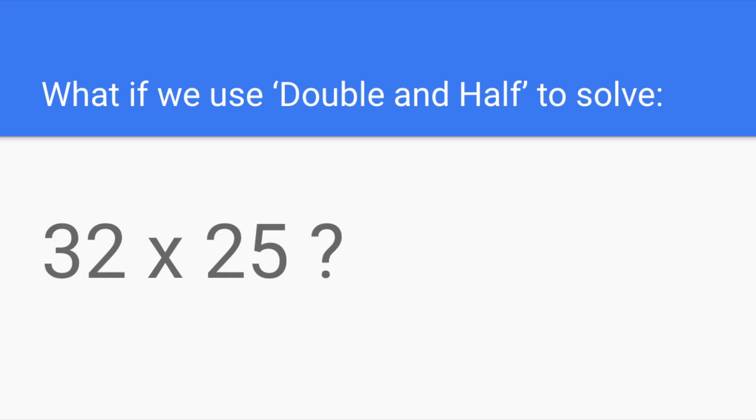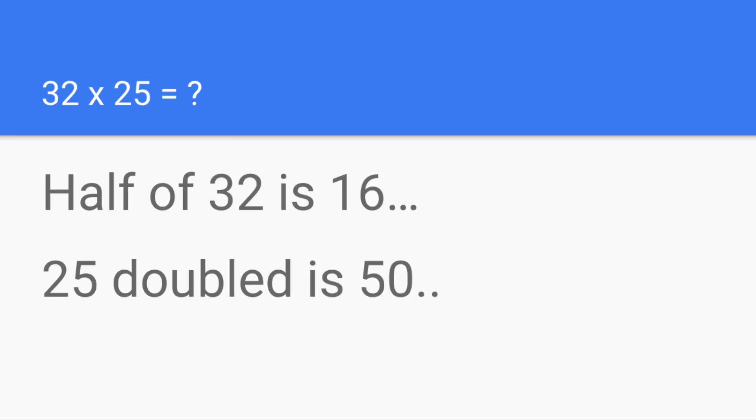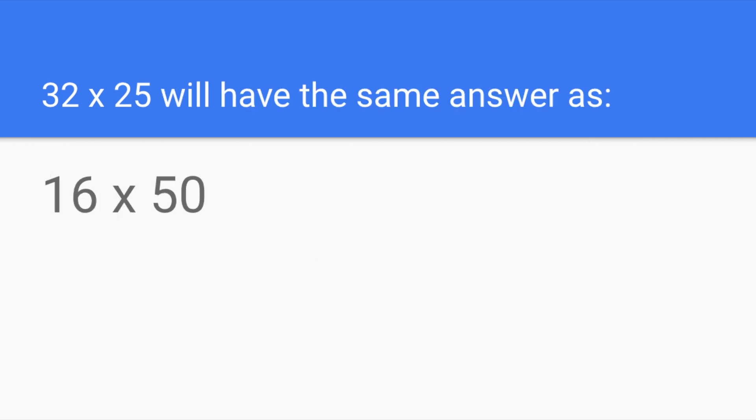This one is a bit harder. But, I do notice that I could easily find half of one of those numbers and then double the other. 32 I could cut in half to 16, and the double of 25 is 50. So, now I could solve 16 times 50, and I know that I would have the same answer as 32 times 25.